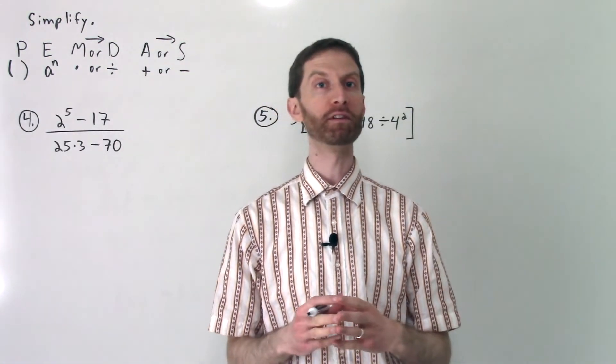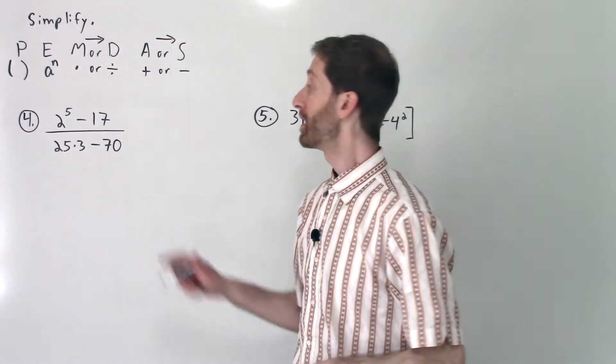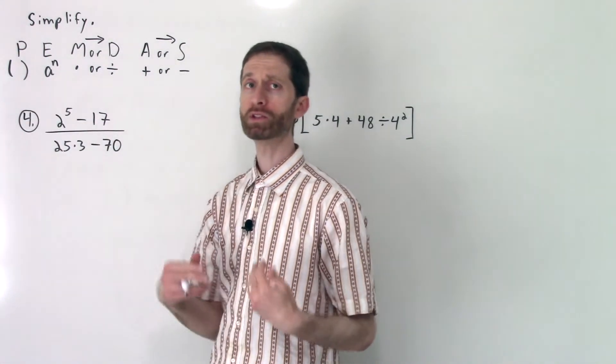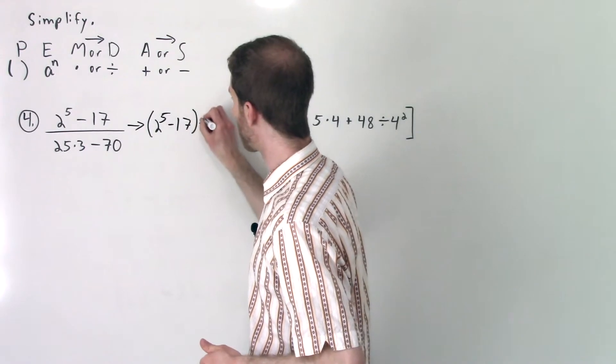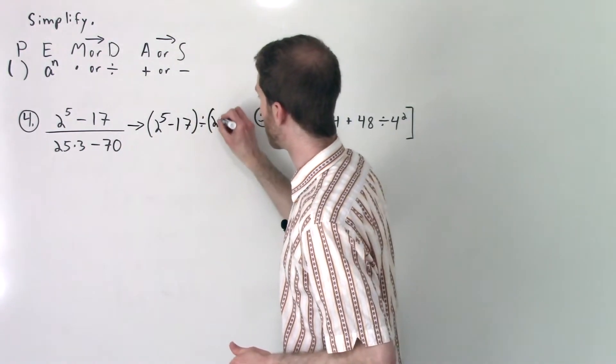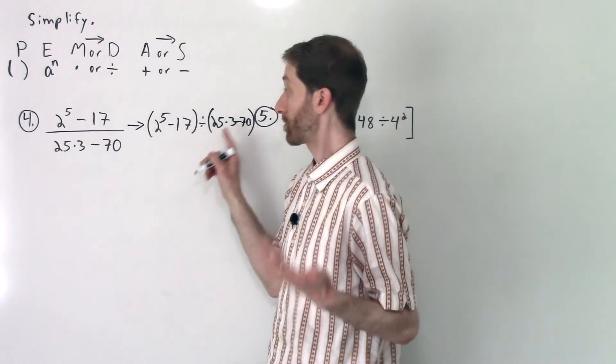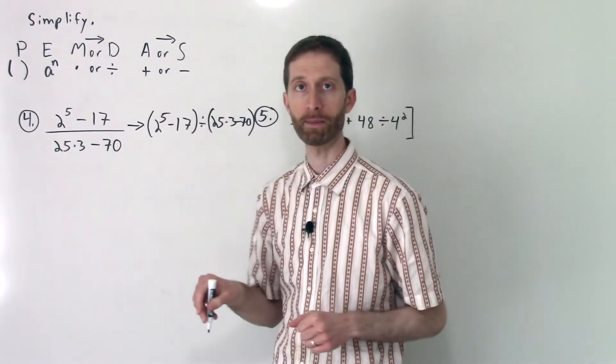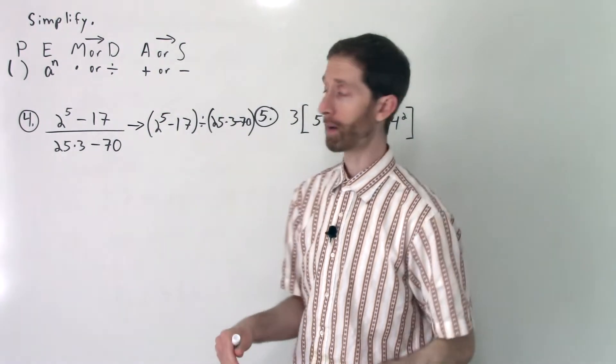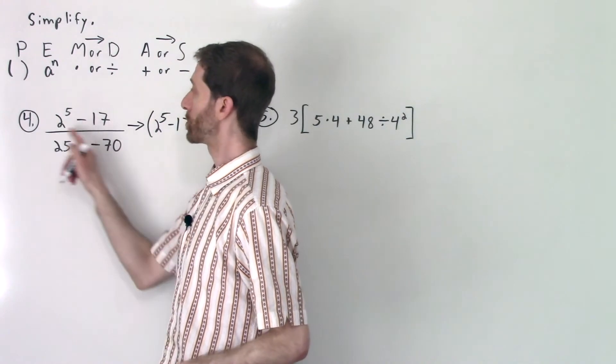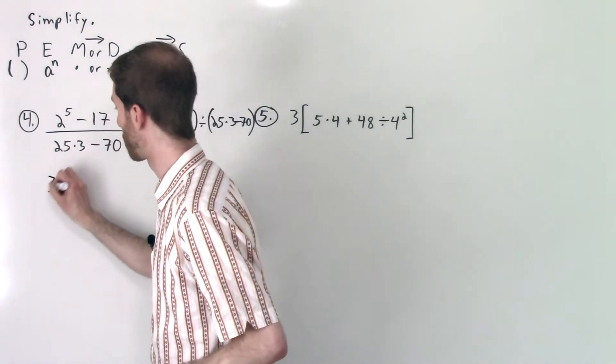And here we are on the flip side of the video where we are going to continue to simplify with the order of operations. As promised, here is a giant fraction bar. This fraction bar serves as a grouping symbol. This is the same as literally looking at the problem as (2⁵ - 17) divided by everything on the bottom there: 25 × 3 - 70. The whole point is that this fraction bar serves as a grouping symbol because you're literally saying the entire numerator divided by the entire denominator. So we need to simplify the numerator completely and the denominator completely before proceeding.